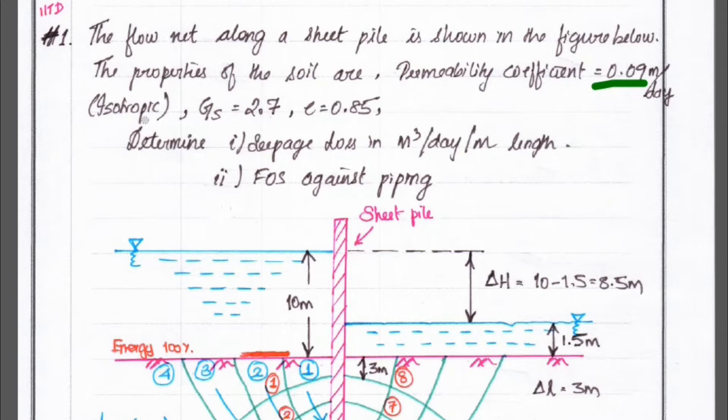So in all the channels, all the layers have equal permeability. And specific gravity is equal to 2.7 and void ratio is equal to 0.85. So, determine the seepage loss in meter cube per day per meter length and FOS against piping.